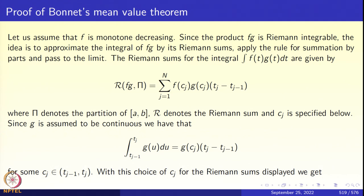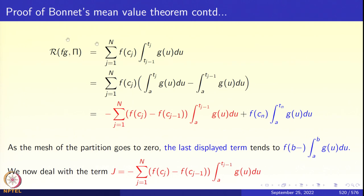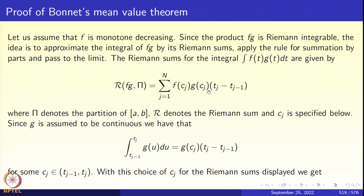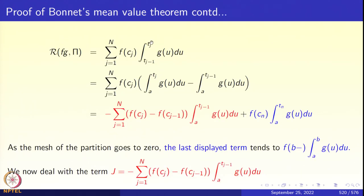Since g is continuous, by the usual mean value theorem, the integral of g(u) du from t_{j-1} to t_j equals (t_j minus t_{j-1}) times the function evaluated at an intermediate point c_j. This follows immediately from Lagrange's mean value theorem. So the Riemann sum is the summation j from 1 to n of f(c_j) times the integral from t_{j-1} to t_j of g(u) du. The integral from t_{j-1} to t_j can be written as a difference, and now we are ready to apply Abel's summation by parts formula.